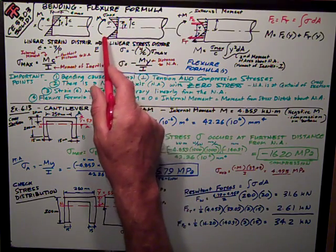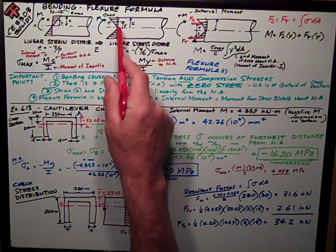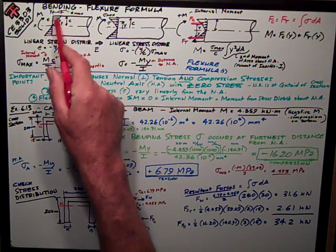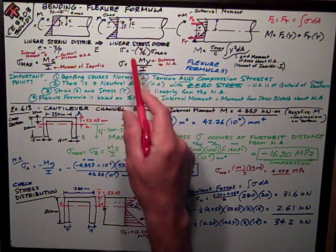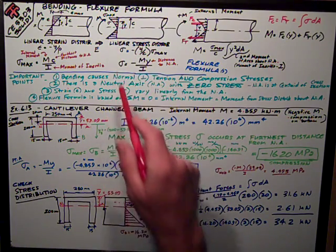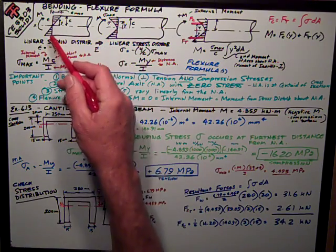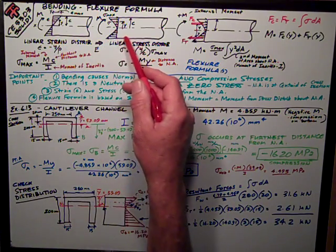We can show that a positive moment will create compression, just as it creates shortening in the top part of the beam. It'll create compressive stresses in the top part of the beam, and tensile stresses, because it's lengthening in the bottom part of the beam.